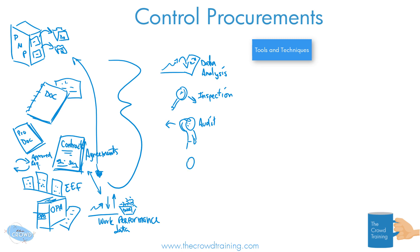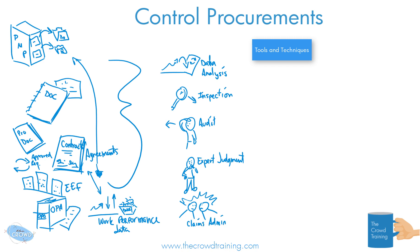We also use our expertise and knowledge — whether that's coming from subject matter experts like procurement managers or those with experience. So that's expert judgment. And sometimes there are going to be disagreements about what's going on in the contract and agreements and procurements, so there will be times where we have to do some claims administration to look at how things are going and try to figure things out in that fashion. Those are the tools and techniques.